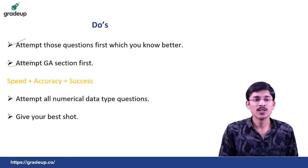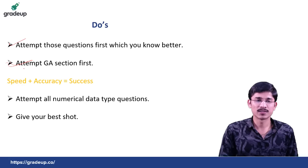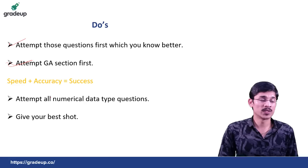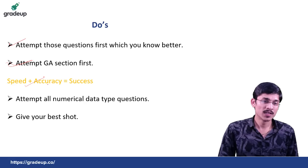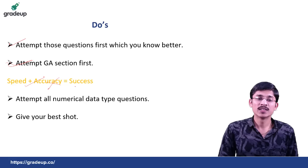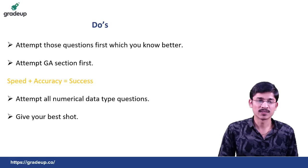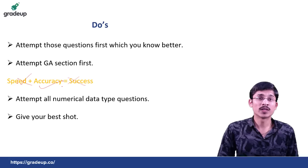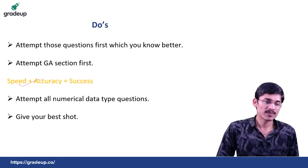Now speed plus accuracy equals success. See guys, if you have enough speed but you don't have accuracy, then you will not get the success. Now if you have accuracy but you don't have speed, then also you will not be successful. So remember that speed and accuracy both are required to be successful.